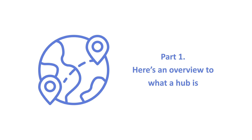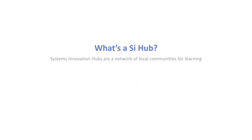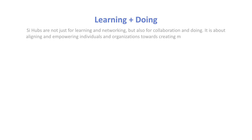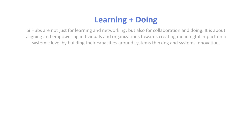So what are Systems Innovation Hubs? These are a network of local communities for learning about and doing systems innovation. These are spaces for bringing people and organizations together for shared learning about systems thinking and innovation, for different kinds of events, activities, services, and collaborations. It's a combination of both learning and doing — not just for learning and networking but also collaboration and doing. It's a lab model about aligning and empowering individuals and organizations towards creating meaningful impact on a systemic level.